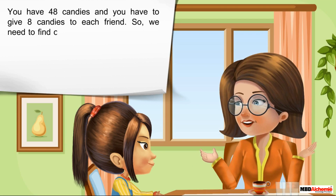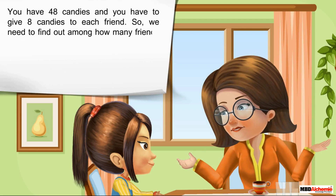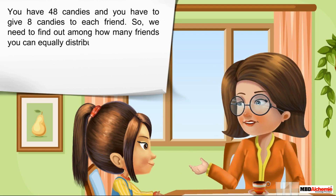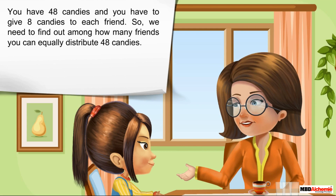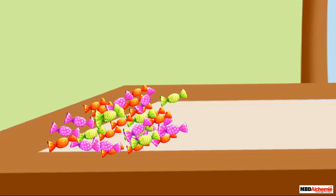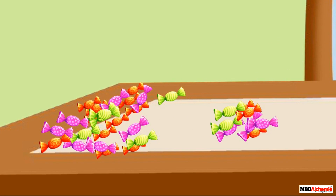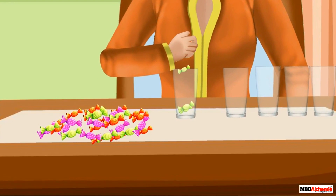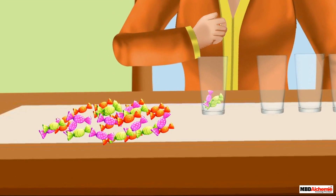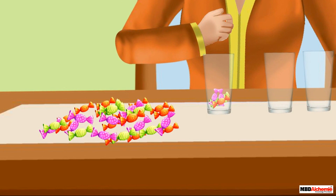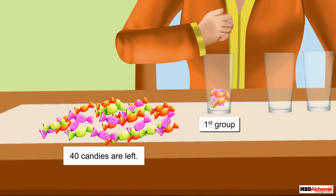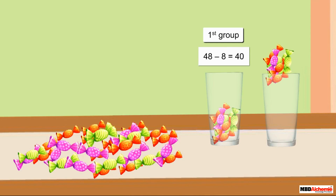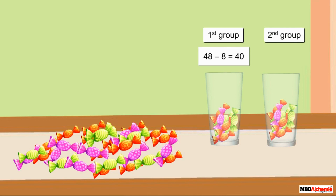You have 48 candies and you have to give eight candies to each friend, so we need to find out among how many friends you can equally distribute 48 candies. First we make a group of eight candies out of 48 — one, two, three, four, five, six, seven, and eight. 40 candies are left. Then we make another group of eight candies; now 32 candies are left.